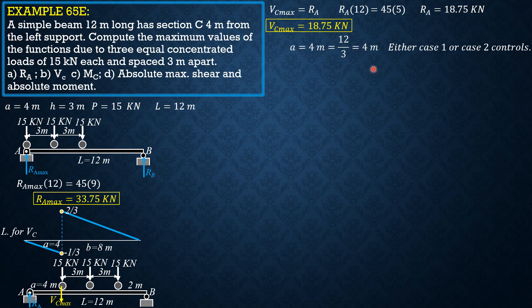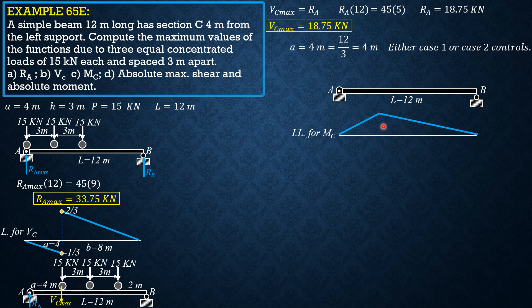For case 1, the center load is over point C. Since A = 4, this means the leftmost load is 1 meter to the left of C. The maximum moment at C is then RA (for this arrangement) times 4, minus 15 times 3.